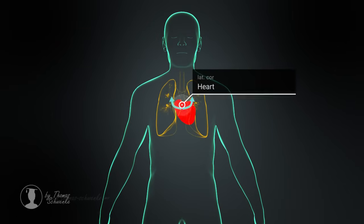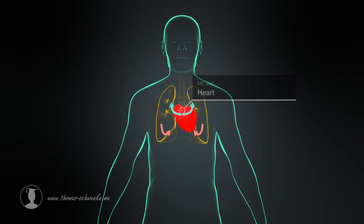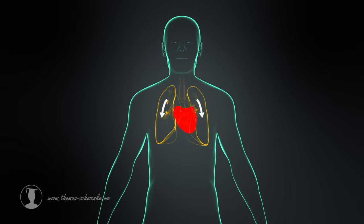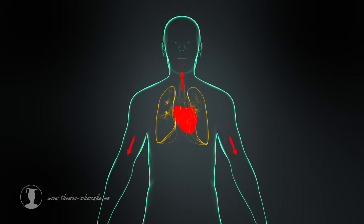The heart's task is to pump oxygen-poor blood through the lungs, and then transport the oxygen-rich blood coming from the lungs into the rest of the body.